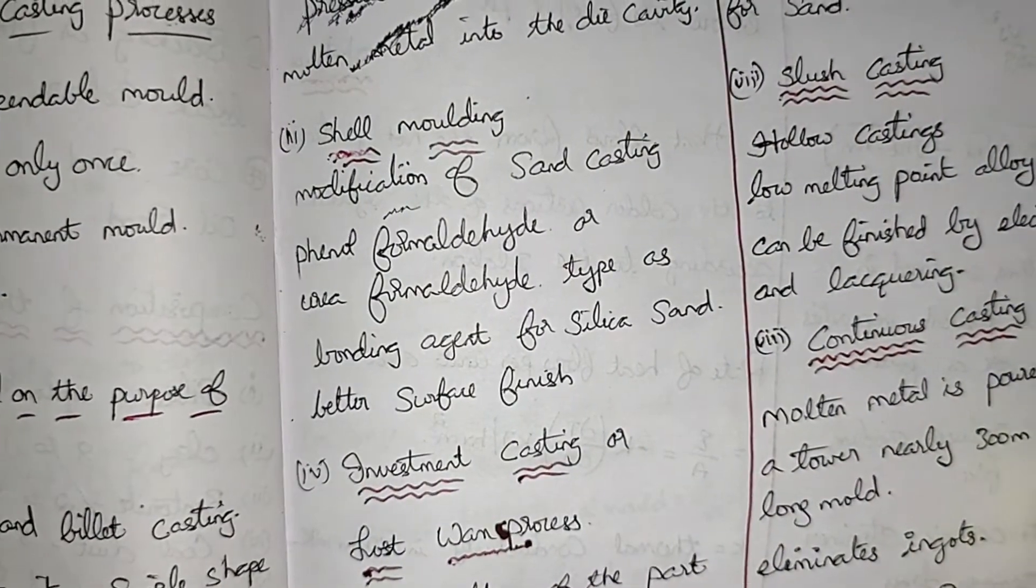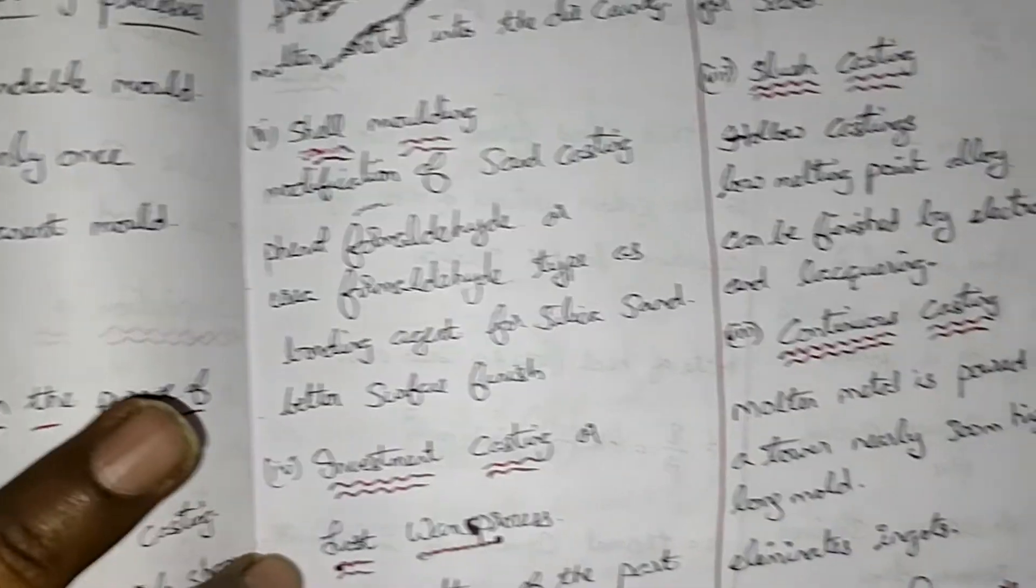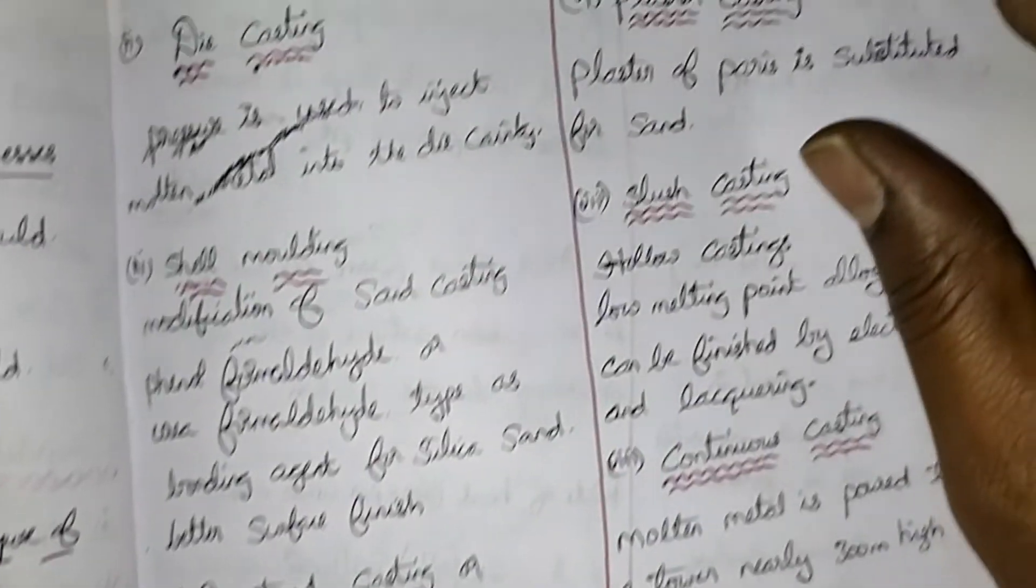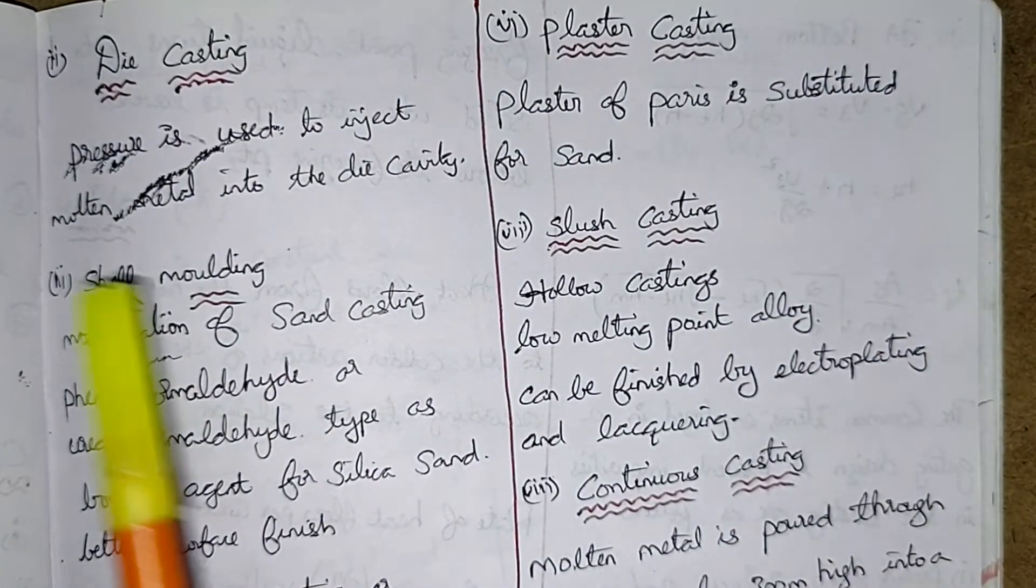And die casting. Pressure is used to inject molten metal into the die cavity.